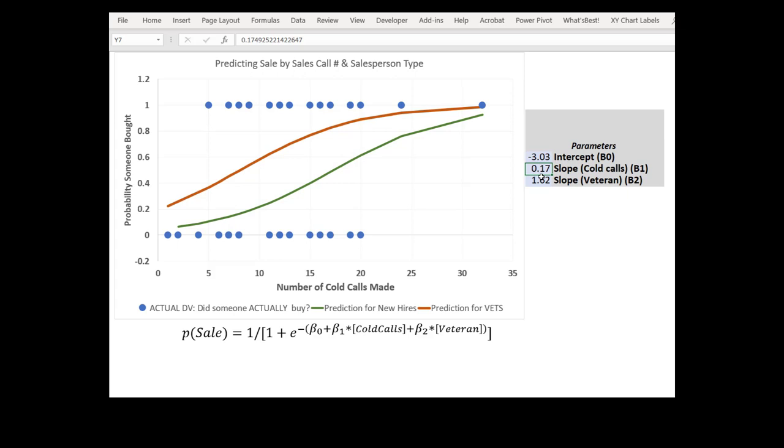Let's bump that number up a little bit and see how it affects our curves, 0.35. Notice how by increasing the parameter we see that the number of cold calls becomes much more effective at closing a sale much faster.